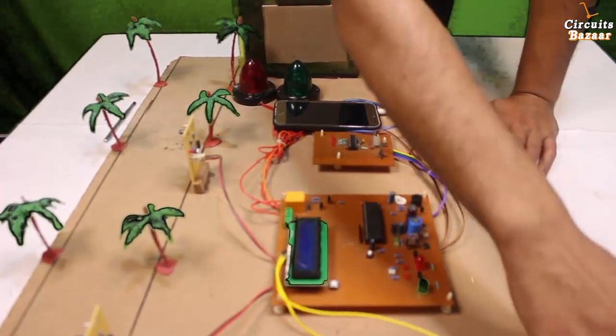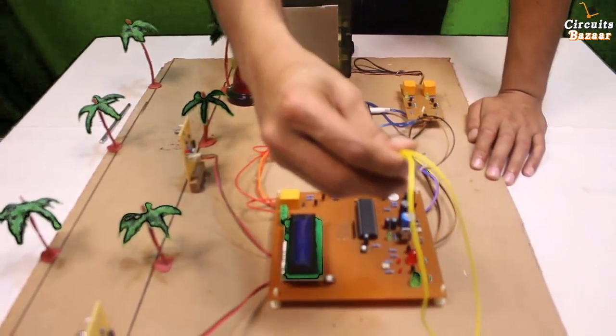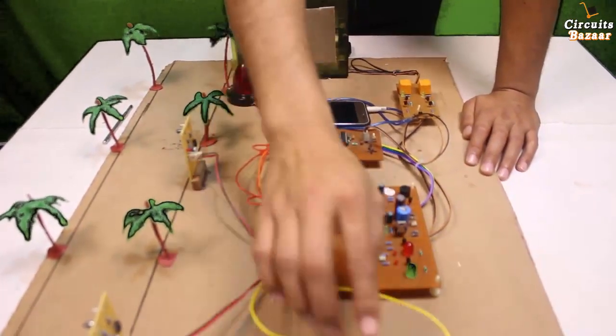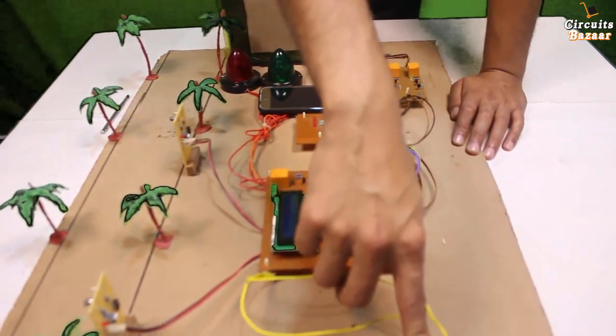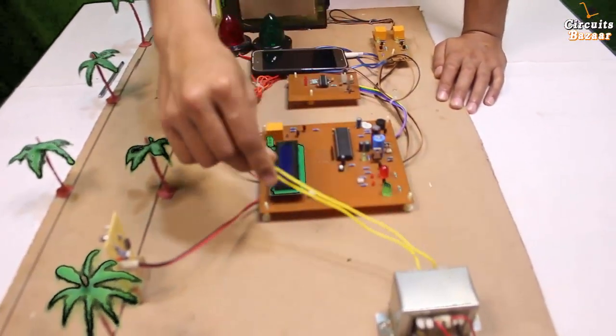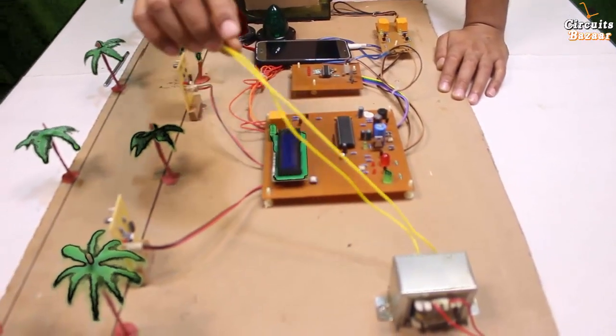So basically this is our 230 volt AC. This 230 volt AC is converted into 12 volt AC using step down transformer. This is high current 2 ampere transformer. Not 12012, this is only 012 transformer, so it is capable of providing 12 volt.